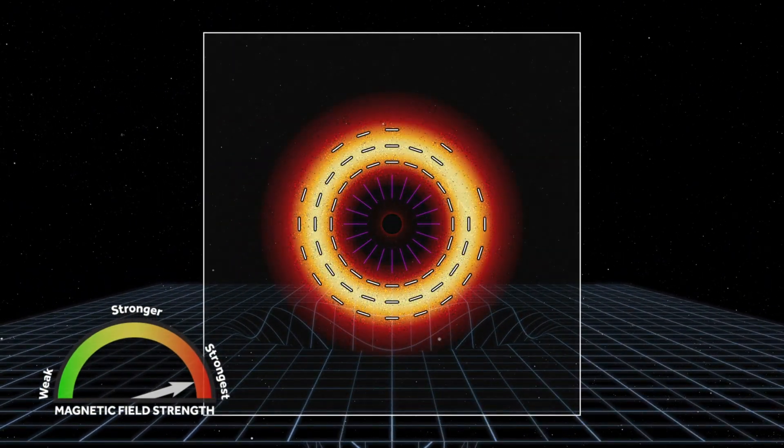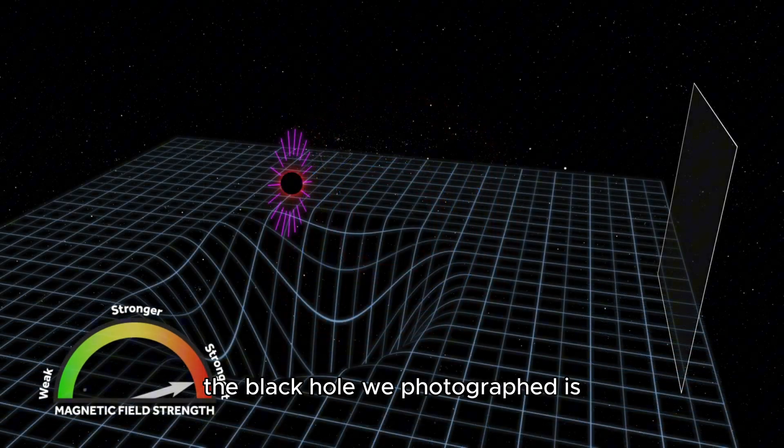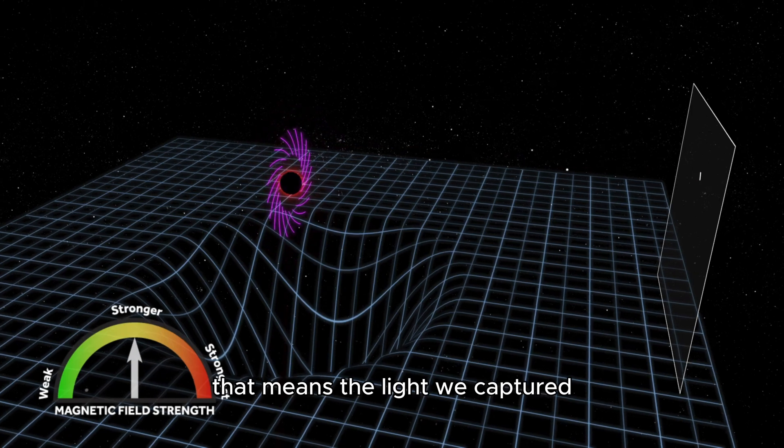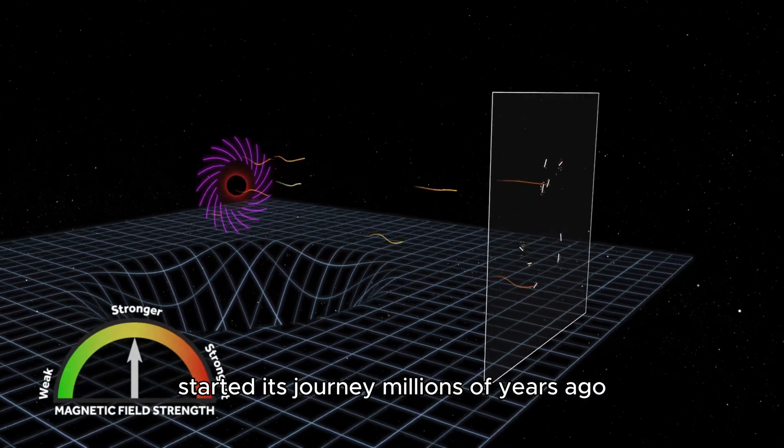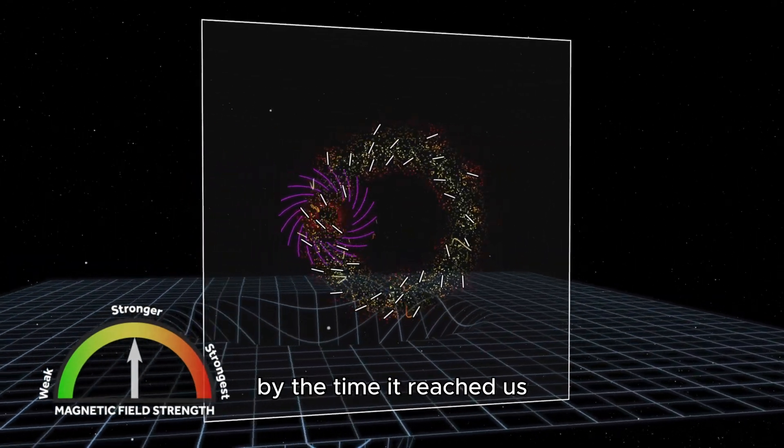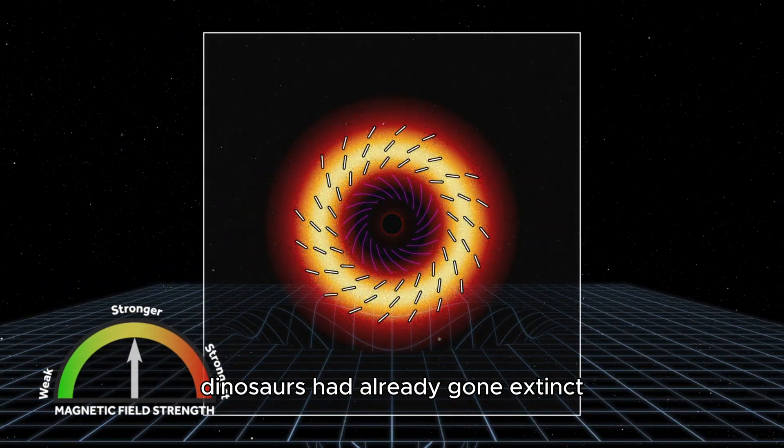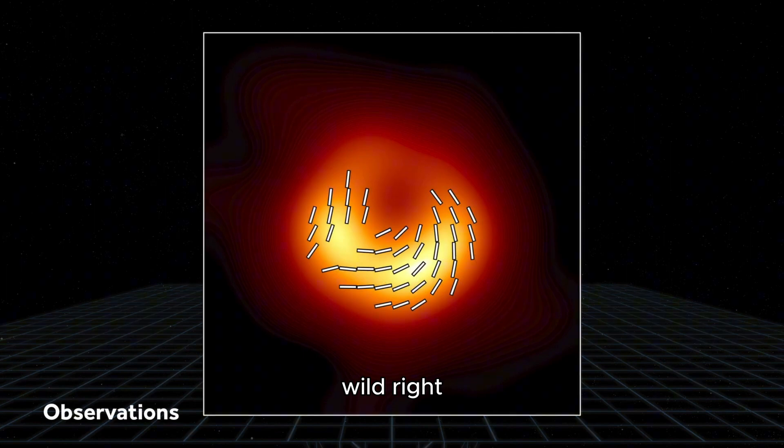And guess what? The black hole we photographed is 55 million light-years away. That means the light we captured started its journey millions of years ago. By the time it reached us, dinosaurs had already gone extinct. Wild, right?